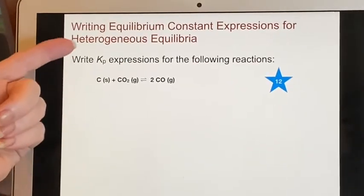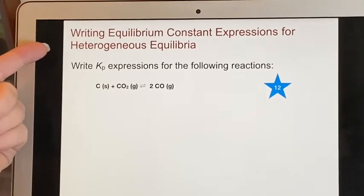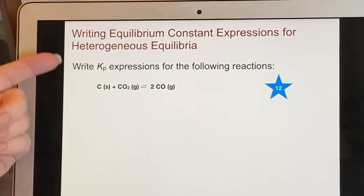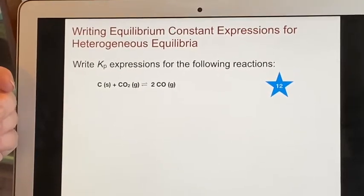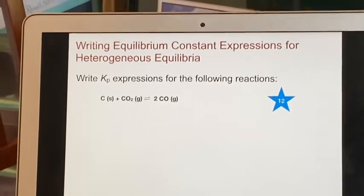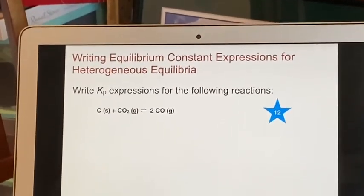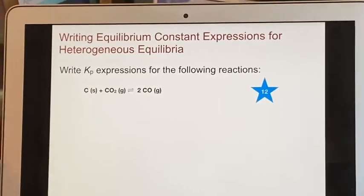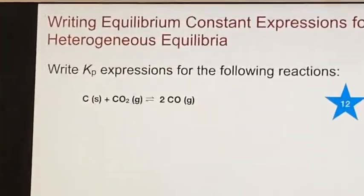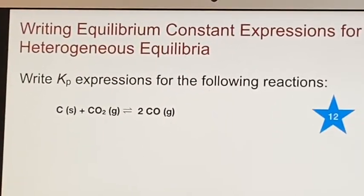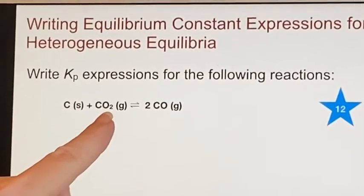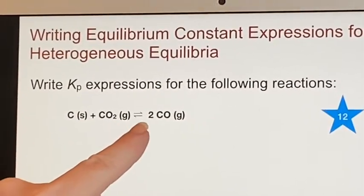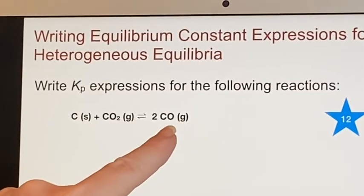Let us try writing some equilibrium constant expressions in the case of heterogeneous equilibria. If you look back, you'll find out we haven't done this before. Even though we're almost halfway through this chapter, we're finally getting to this idea. So for number 12, we're going to look first of all at this one. Here's carbon as a solid and carbon dioxide in equilibrium with carbon monoxide.